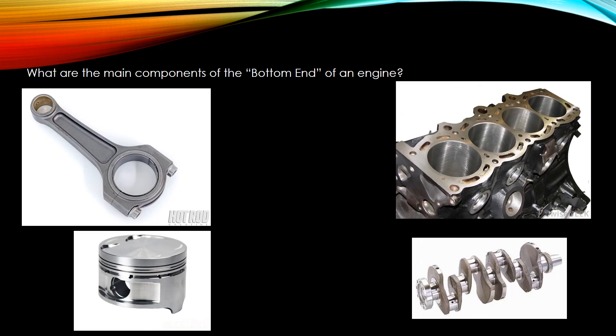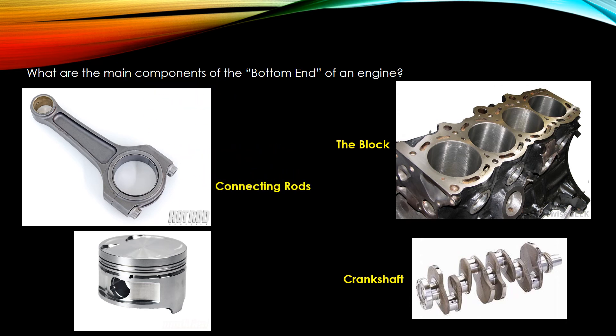Here are the four bottom end components we focus on in class: the engine block itself, the crankshaft, the connecting rod, and the pistons. You should be able to identify all four of these as bottom end components.